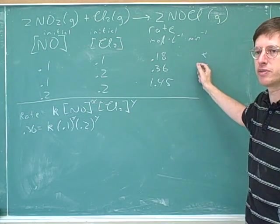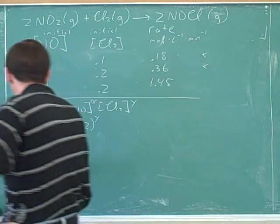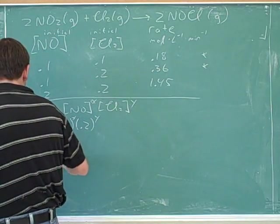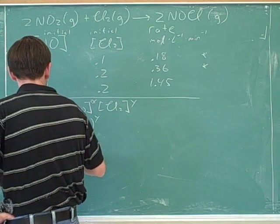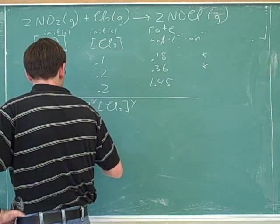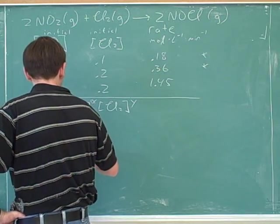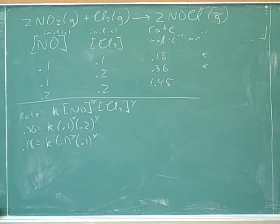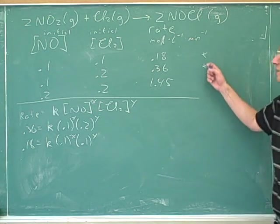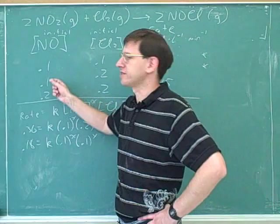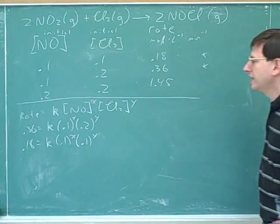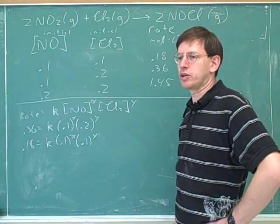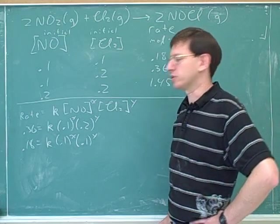By the way, these numbers don't go in brackets. Because this is not the concentration of 0.1, it's just the number 0.1. And then what would the equation look like for the first row? We also wanted to look at this row, right? Remember, we're going to compare these two cases to each other. Well, for this row, it would look like 0.18 equals k, 0.1 to the x, times 0.1 to the y.